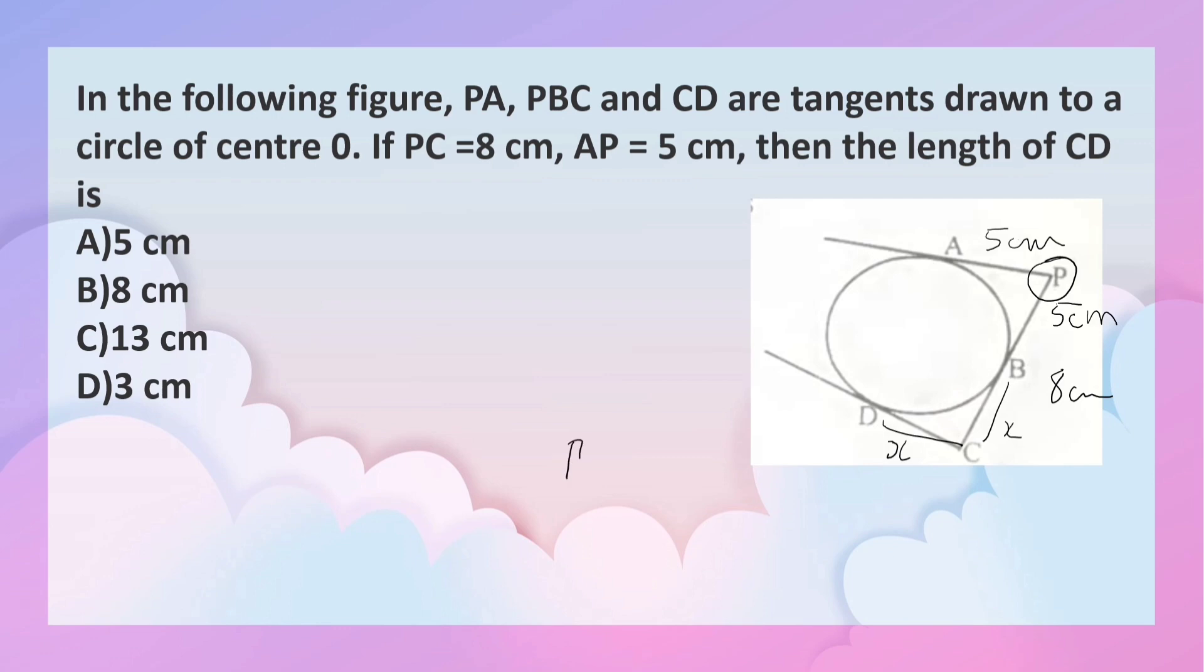So BC is equal to PC minus PB. From the figure you can understand that PC is 8, PB is 5, so 8 minus 5 equals 3 cm. Therefore, CD is 3 cm. Option D is correct, the correct option is option D.